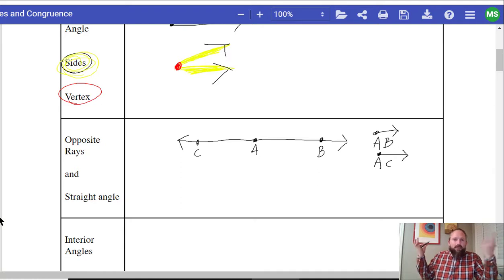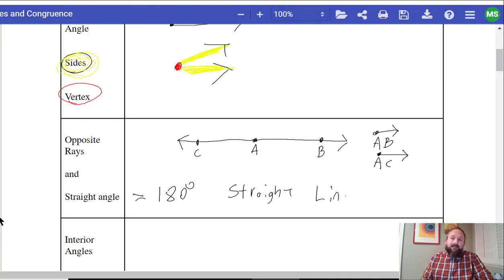Well, there we go. Now these together make a straight angle. And a straight angle will equal 180 degrees. A straight angle is a straight line. Lines are straight. Let's go on.